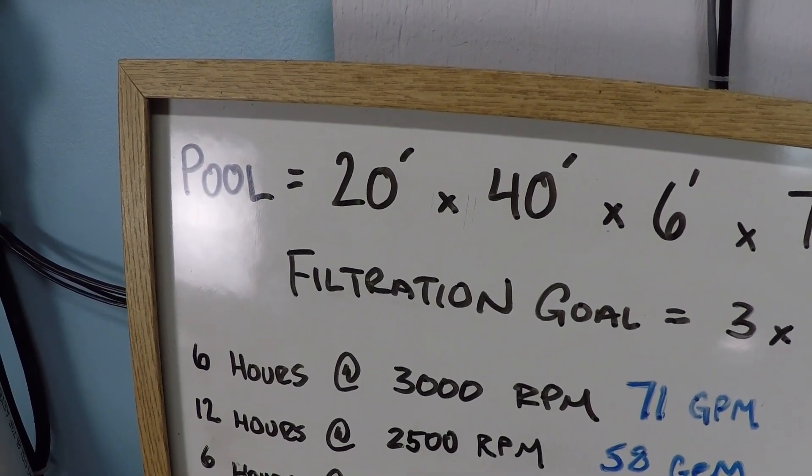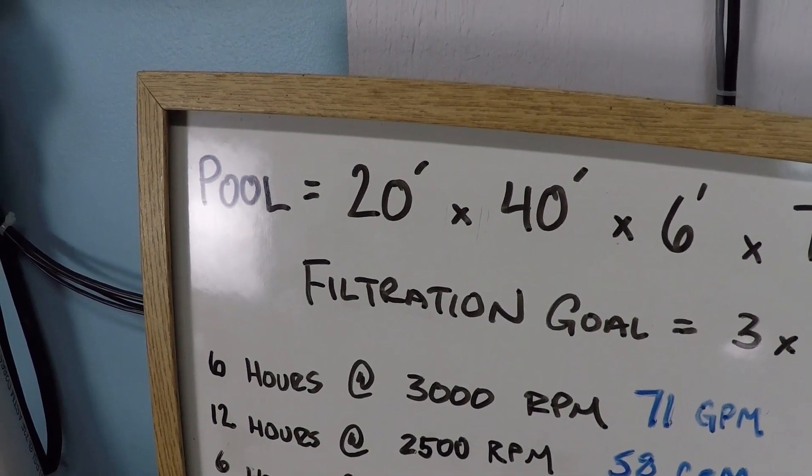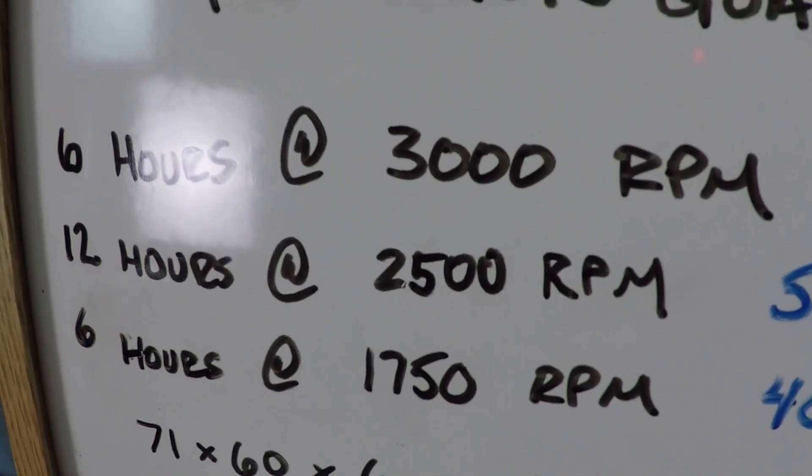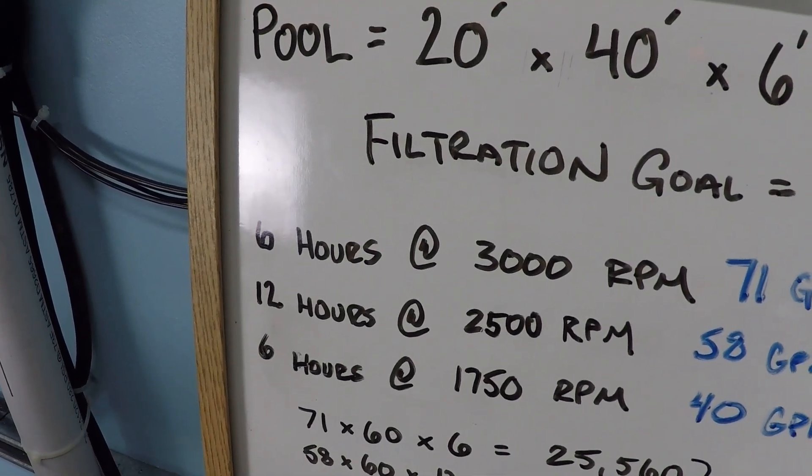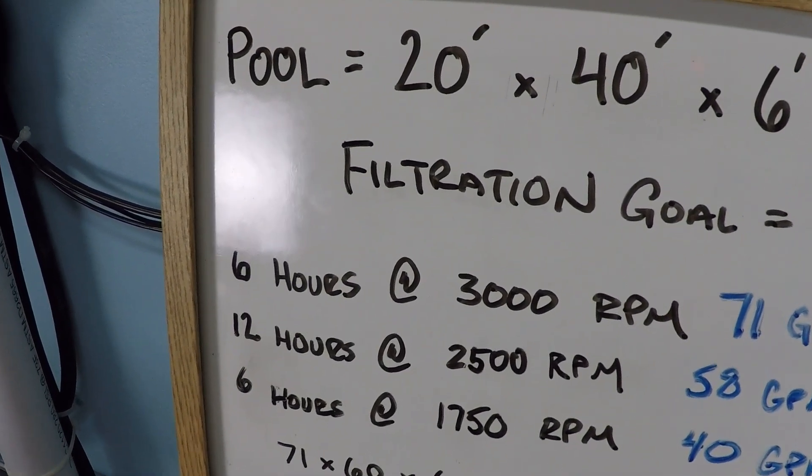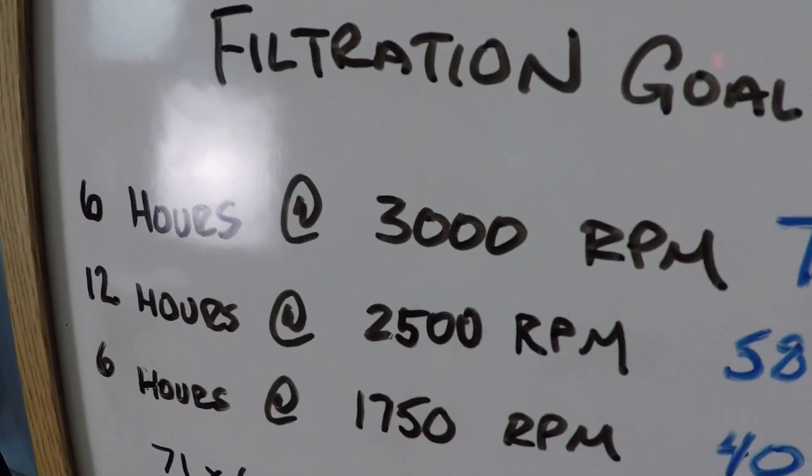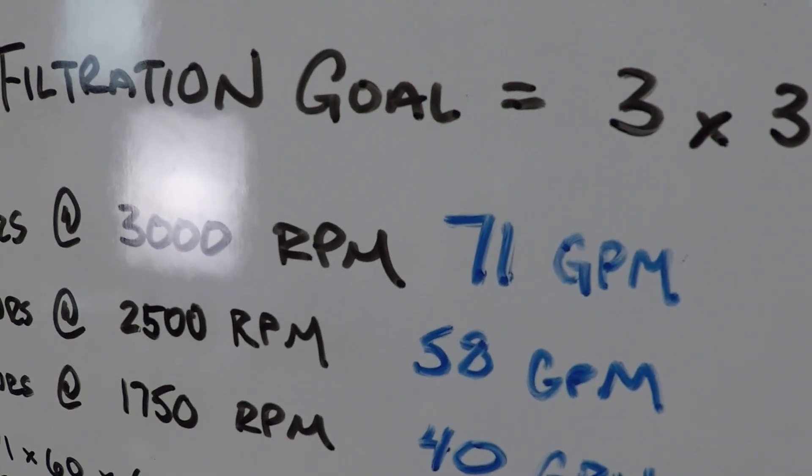If it had 240 volts there is additional, for example 3000 rpm that's the maximum speed on this variable speed pump. If we had 240 volts it would be more than 3000, would be 3450.